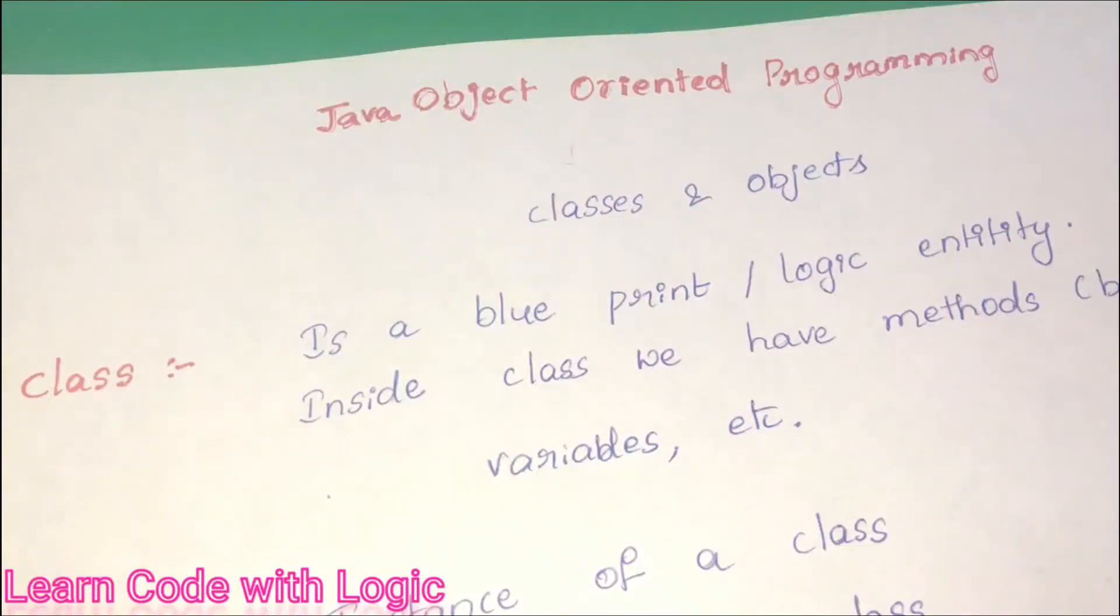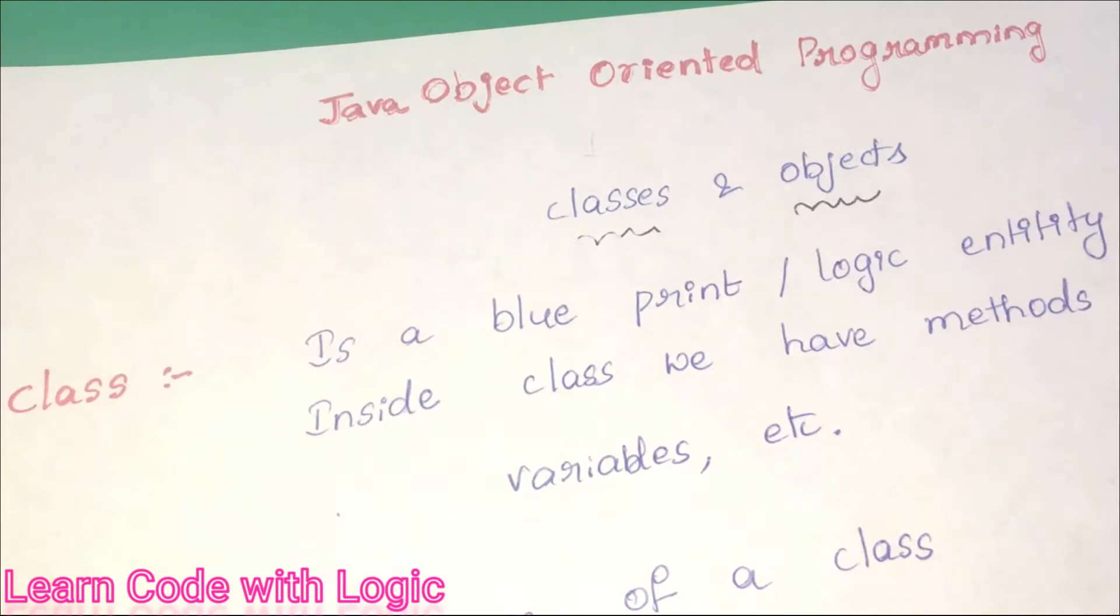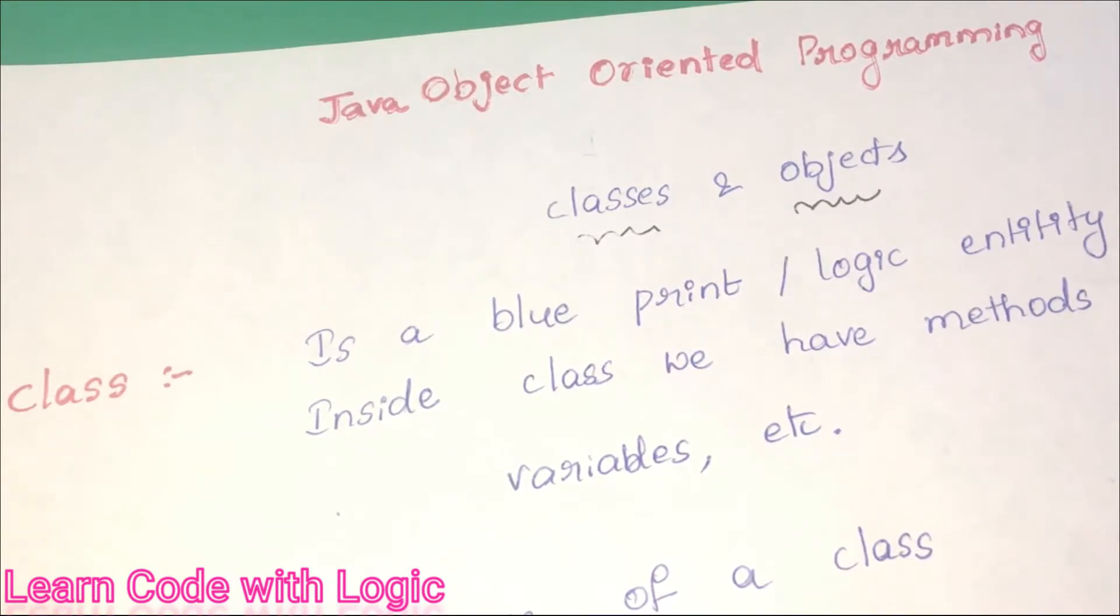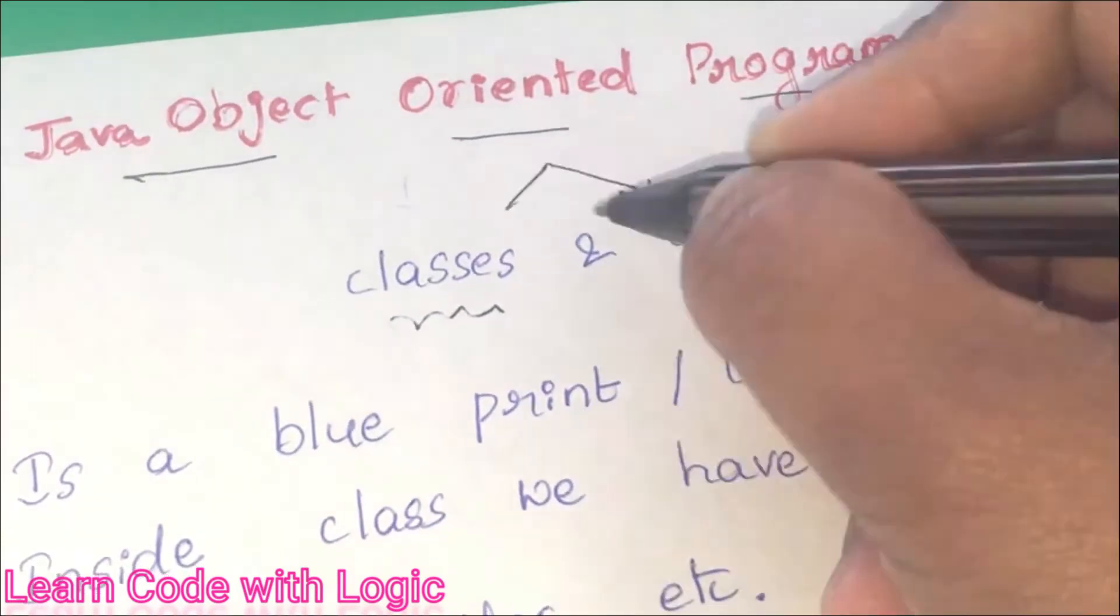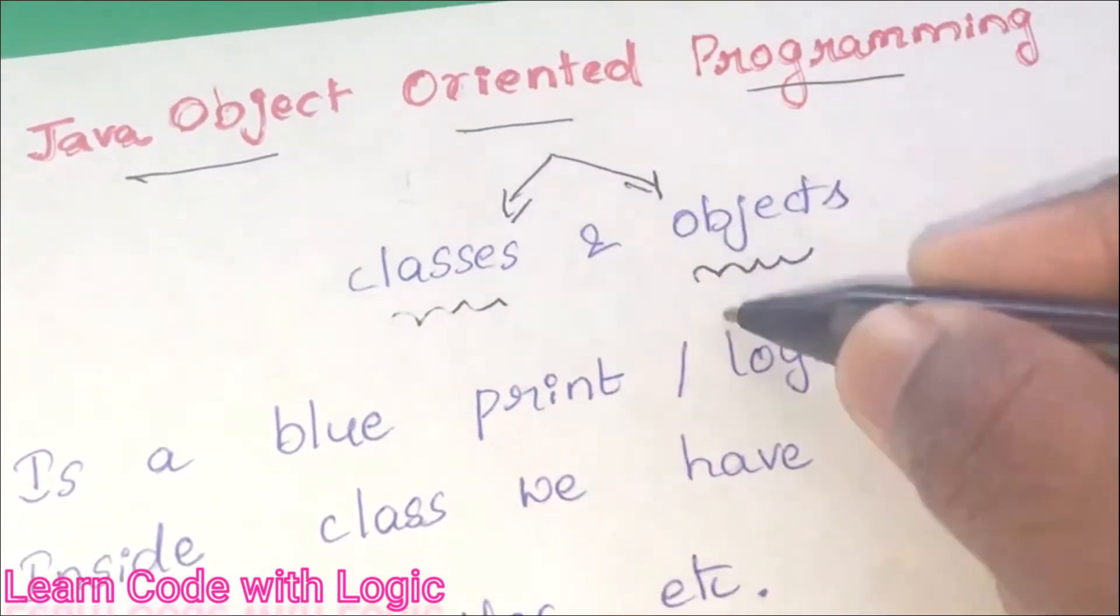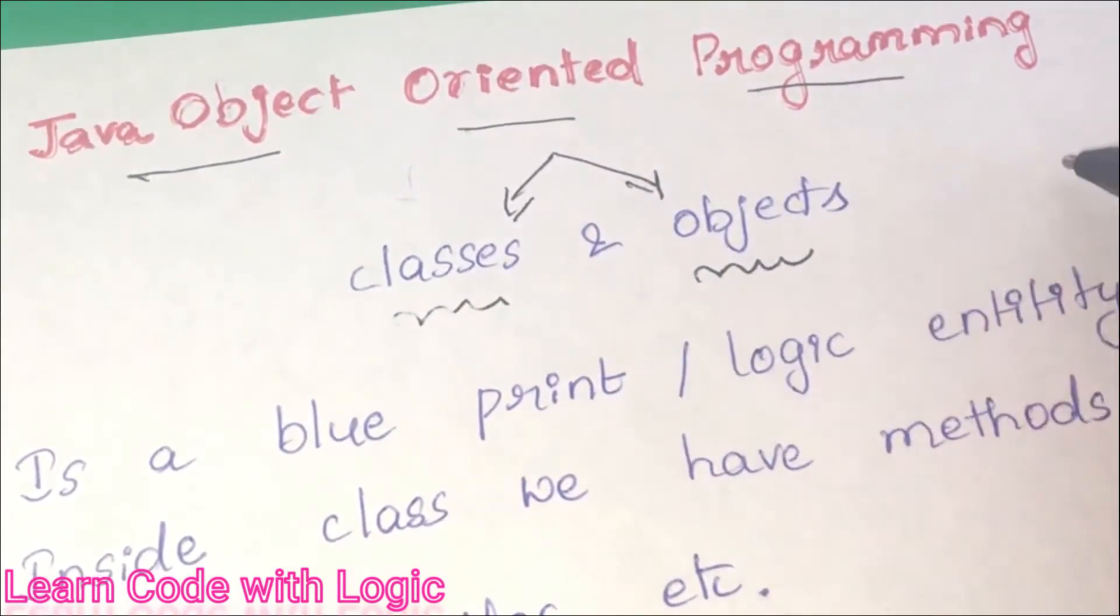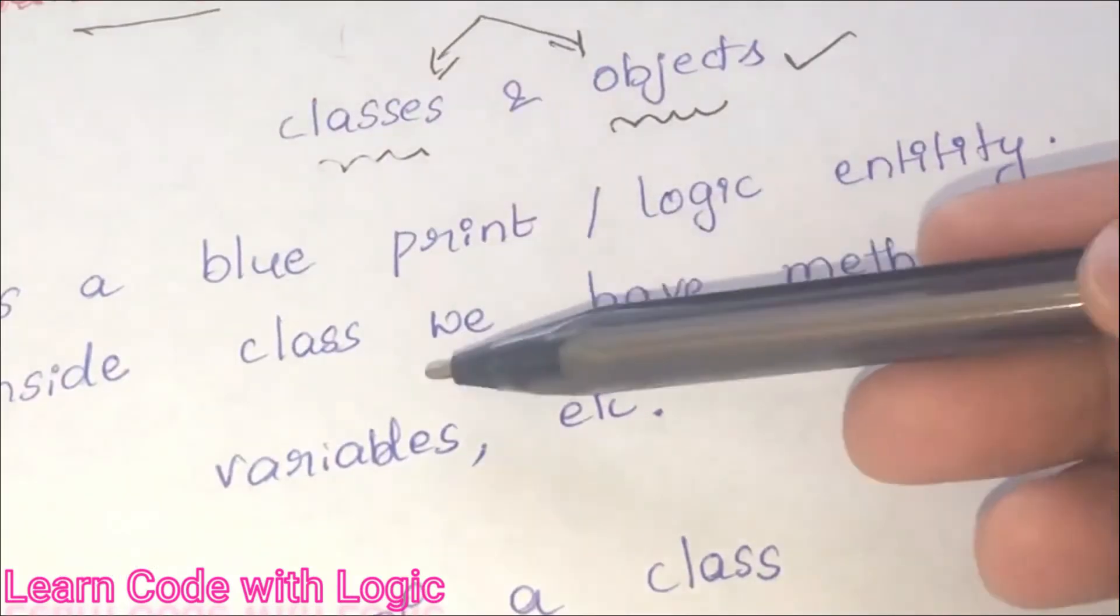Hi friends, welcome back to my Java tutorials. In this video, I will talk about what is classes and objects and how to create those objects, purpose of the objects creation, some of the main important concepts in Java. As we know, Java is object-oriented programming. Classes and objects are basic concepts of object-oriented programming.